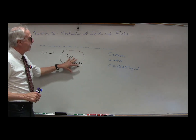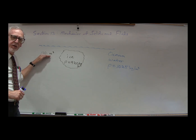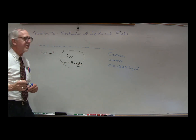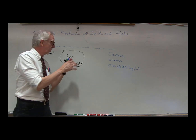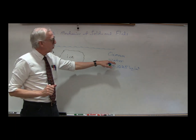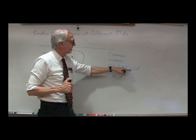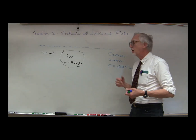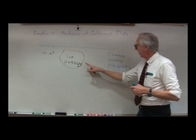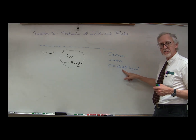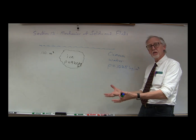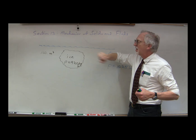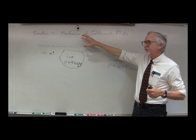Let's look at an example with an iceberg. We have a block of ice with a volume of 100 cubic meters. Ice has a density of about 920 kilograms per cubic meter. It is floating in the ocean, where saltwater has a density of 1025 kilograms per cubic meter. Since the density of ice, 920, is less than the density of saltwater, the ice will float. Let's calculate how much of the iceberg is above versus below the water surface.